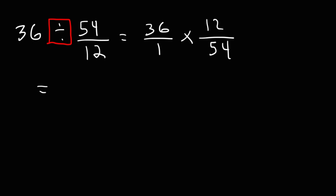Now let's work on a challenge problem. So let's say we have 36 and we want to divide it by 54 over 12. Go ahead and take a minute to work on that. So let's write 36 as 36 over 1. And let's change division to multiplication. And then flip the second fraction. So 54 over 12 becomes 12 over 54. Now let's simplify.